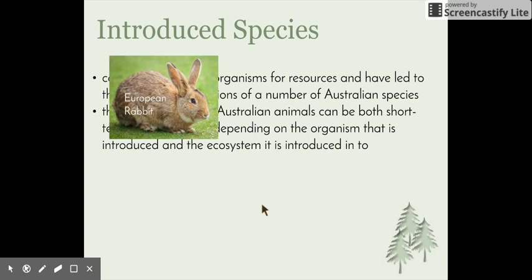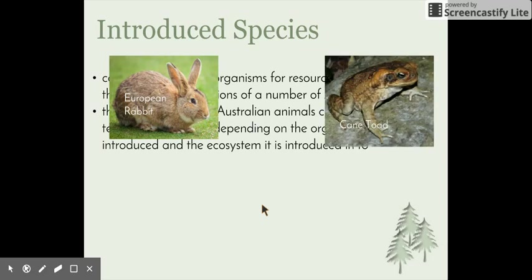Rabbits also compete with cows, sheep, and other herbivores for grass. The cane toad, found in Queensland, is a serious threat to native species eating the sugar cane. The cane toad was introduced to try to control the cane beetle; however, it adapted so quickly to the environment that its population exploded and now presents a major problem.